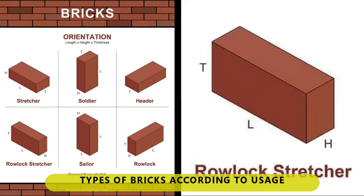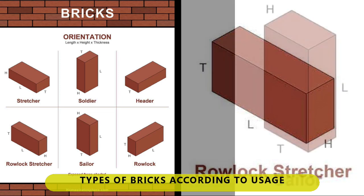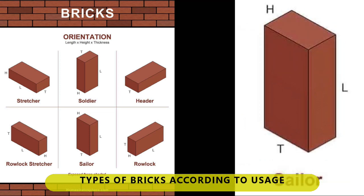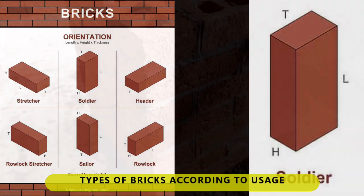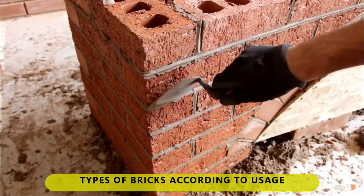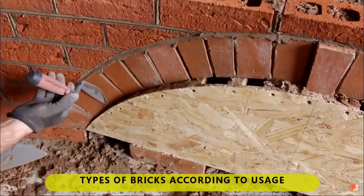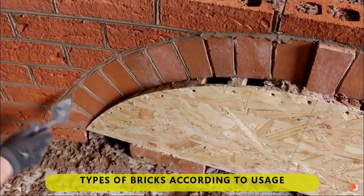4. Schinner — laid horizontally on the edge; the side is visible to the surface of the wall. 5. Sailor — laid vertically on the end; the side is visible to the surface of the wall. 6. Gauge — a chipped soldier brick used for arches.